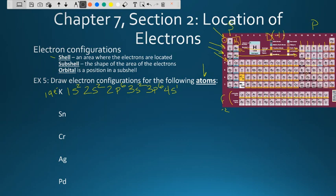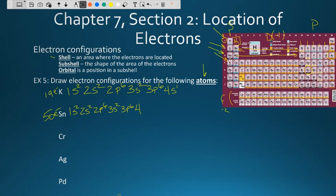Now let's look at tin, which is more complex — it's further out and we have to go through the transition metals. We have 50 total electrons. It starts: 1S2, energy level 2 sub-level S, energy level 2 sub-level P, energy level 3 sub-level S, energy level 3 sub-level P — following the same patterns all the way out to argon. Then energy level 4 sub-level S: 1S2, 2S2, 2P6, 3S2, 3P6, 4S2 — we're to calcium.